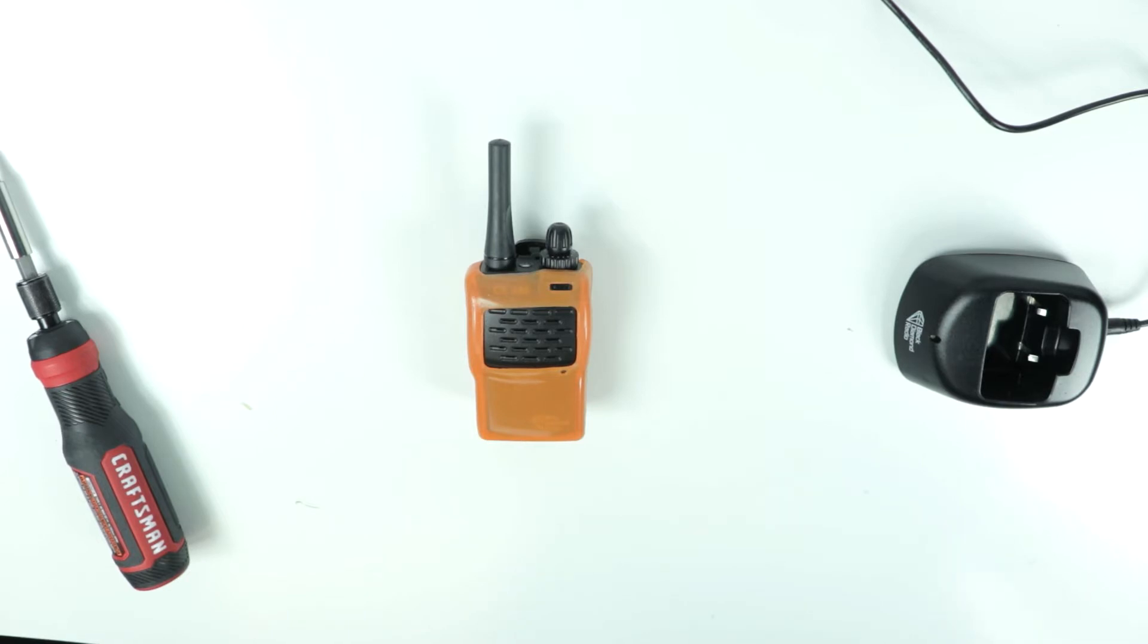The third reason is obviously color. Putting these skins on the radios allows you to differentiate between the different units. So if you assign radios to employees or have some kind of checkout system, this makes it much easier to differentiate them.